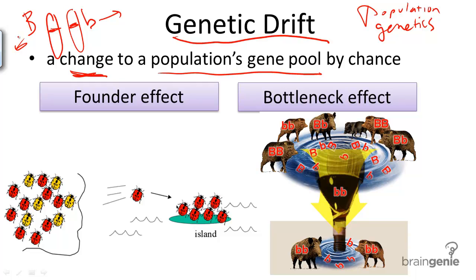Genetic drift — the fact that these allele frequencies can change — can be either good or bad for the population, and is one way that a population can evolve, either becoming a new species or becoming extinct. Let's take a look at the two major examples of genetic drift: the founder effect and the bottleneck effect.